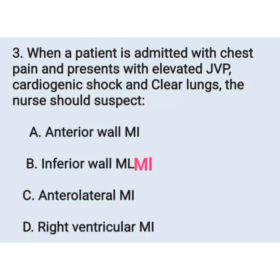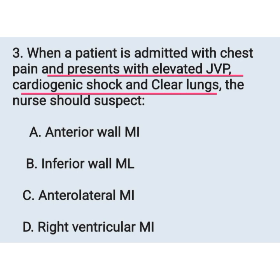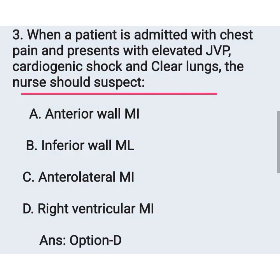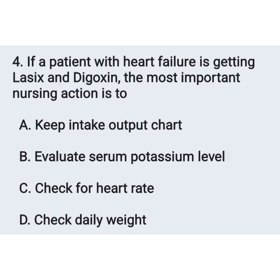Next question: when a patient is admitted with chest pain and presents with elevated jugular venous pressure, cardiogenic shock, and clear lungs, the nurse should suspect — option A: anterior MI, option B: inferior MI, option C: anterolateral MI, option D: right ventricular MI. Chest pain, elevated JVP, cardiogenic shock, and clear lungs are features of right ventricular MI — option D is the correct answer.